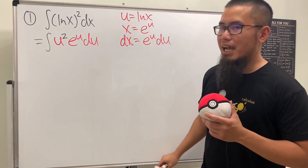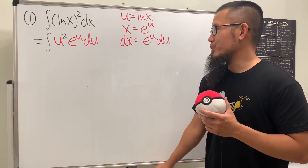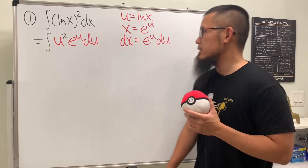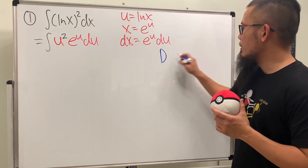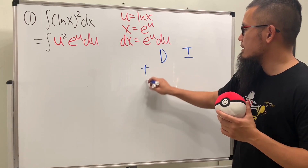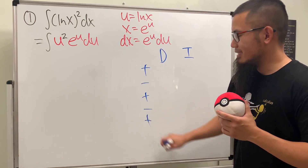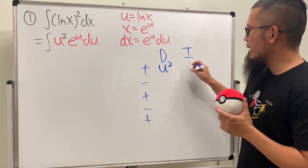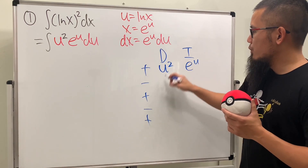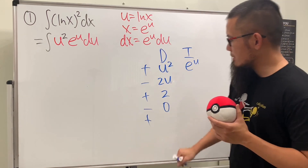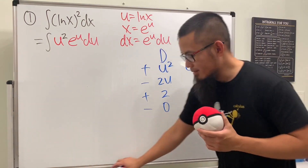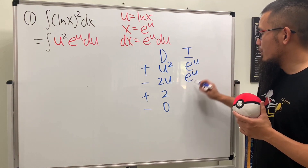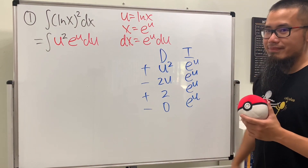And do we recognize that? Yes, we do integration by parts now, and we'll use the DI format. So d and also the i — plus, minus, plus, minus, plus. We will be differentiating u squared and integrating e to the u. Do it once, do it twice, do it three times. We see a zero right here already, so we can stop. And integrating e to the u, we can do that all day long.